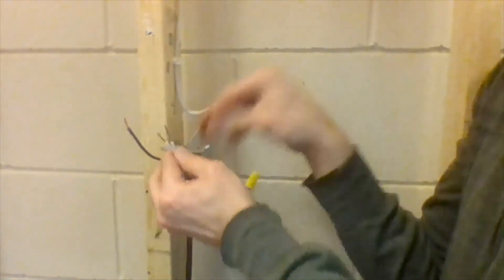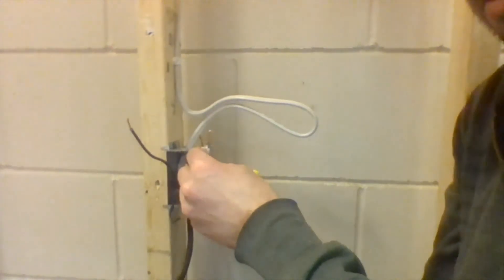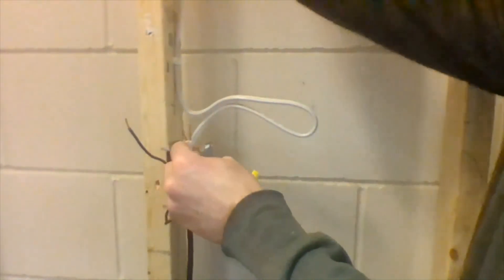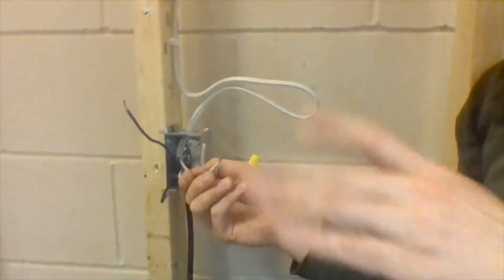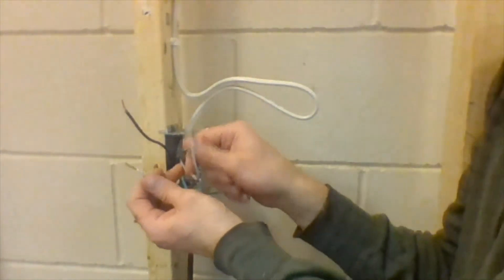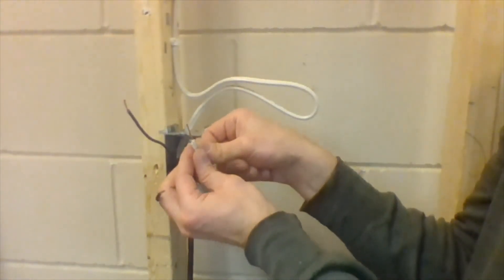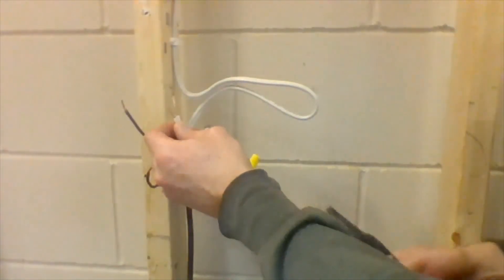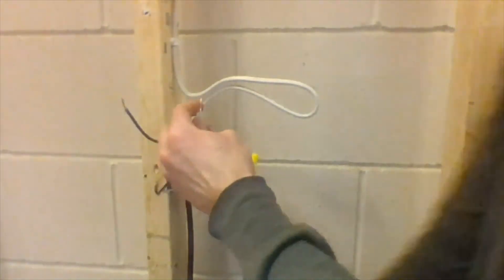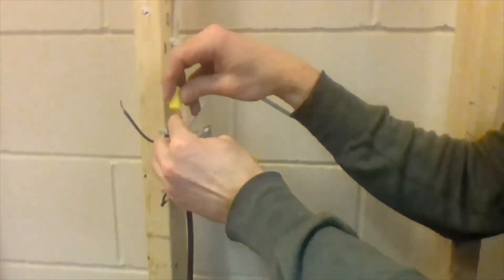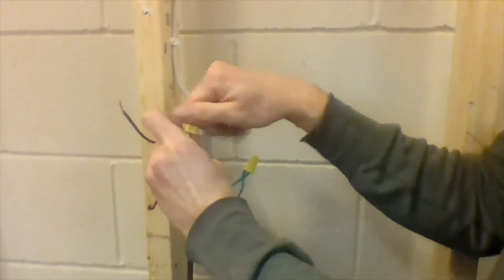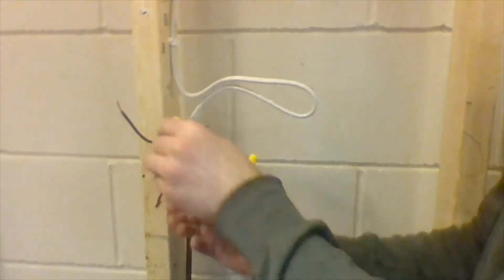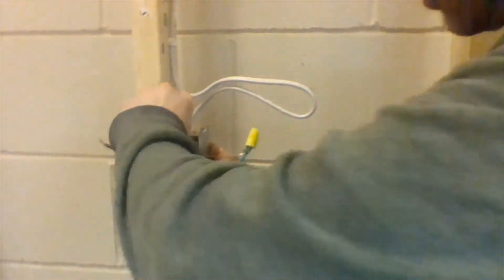Now, my neutrals, I don't actually have to do anything else with these. Because I do need a neutral coming from my source up to my light. But there's no need for a neutral anywhere inside this box other than just a follow through. In this case, because I have a stranded wire and a solid wire, I can just put them together. I'm going to snip them off so that they're the same length. And I can put a cap over top of them like that. If this was two solid wires, you would have to twist those. And those can just be tucked into the box out of our way.